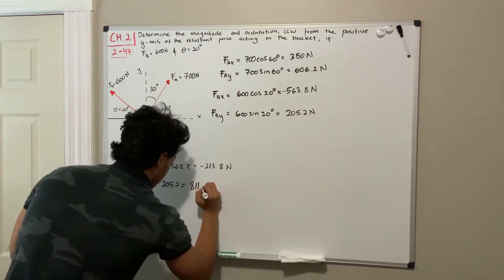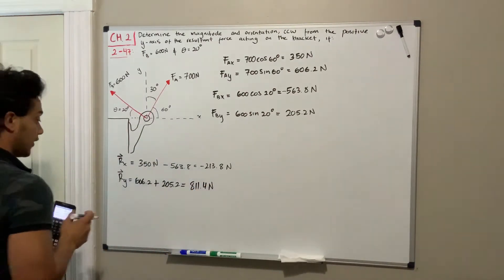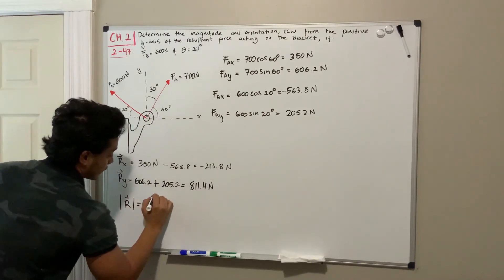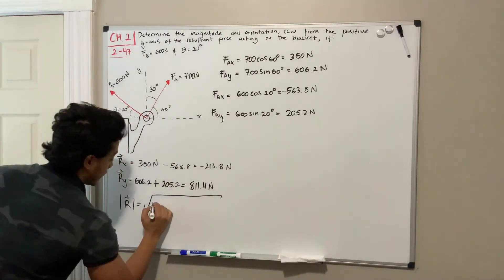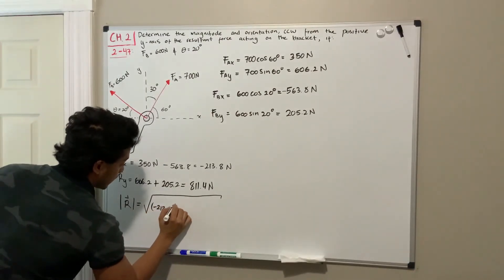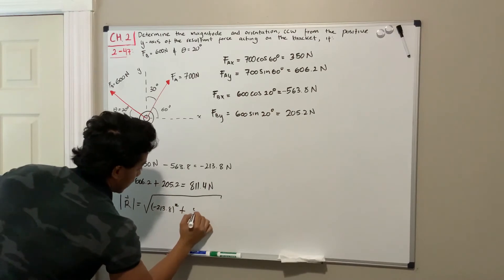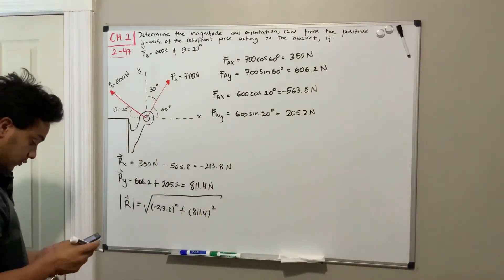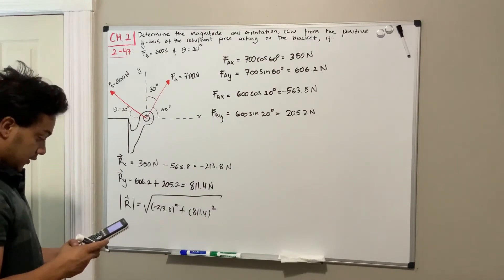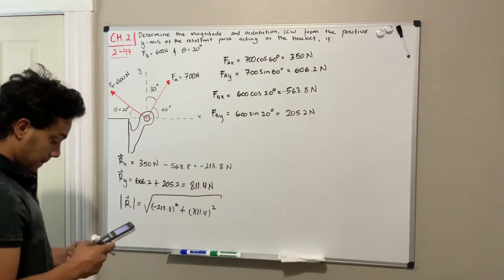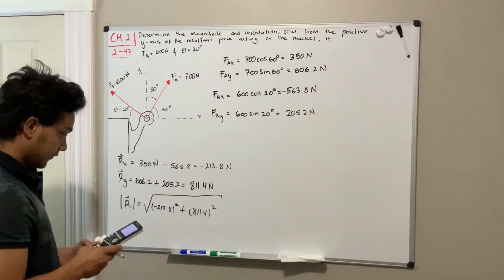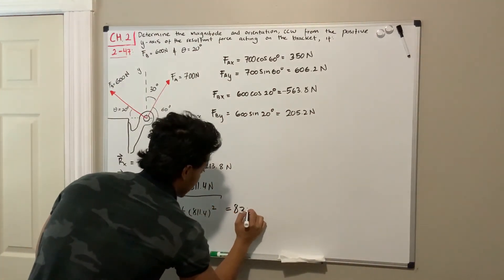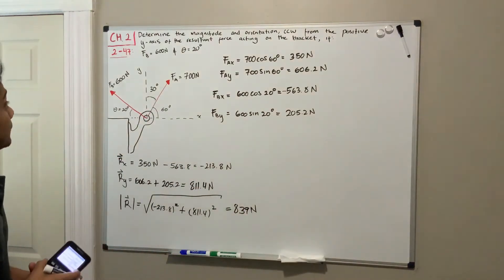In order to find the magnitude, what we're going to do is we're going to apply Pythagorean theorem. So the magnitude of the resultant force, it's going to be the negative 213.8 squared plus the 811.4 squared. So if we use the calculator, we do the square root of the negative 213.8 squared plus 811.4 squared, and this will give us a total of 839 newtons.